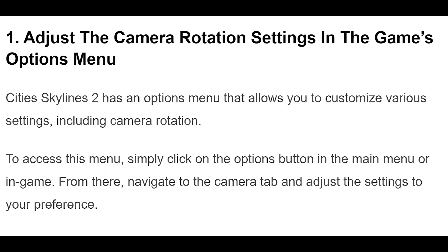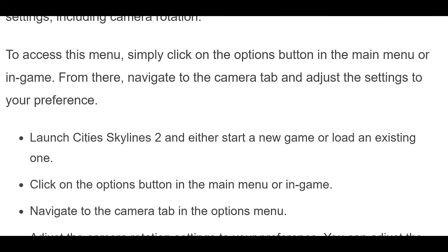1. Adjust the camera rotation settings in the game's options menu. Cities Skylines 2 has an options menu that allows you to customize various settings, including camera rotation. To access this menu, simply click on the options button in the main menu or in-game. From there, navigate to the camera tab and adjust the settings to your preference.